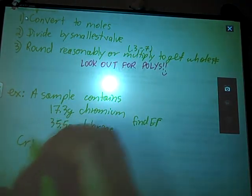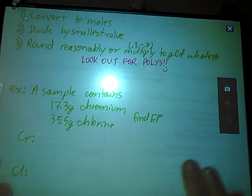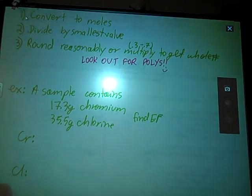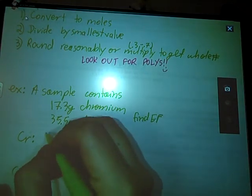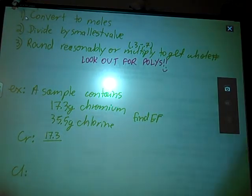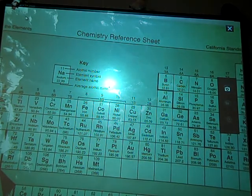Whenever I do these, I tend to label them like this and move in a line across the page so that I know which number pertains to which element. Otherwise, this gets pretty complicated pretty quickly. So 17.3, since I have a mass, I need the formula mass to convert to moles. There's my formula mass of chromium.